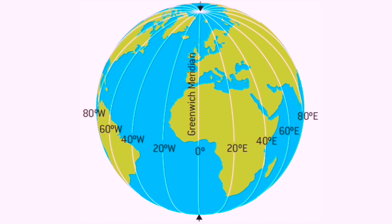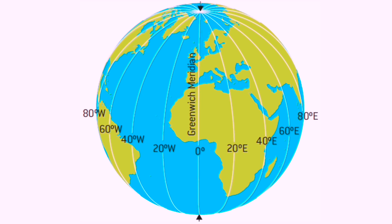We cannot actually see a longitude line on the Earth — they are imaginary. The starting point for longitude is the prime meridian, which is at longitude zero degree, or at Greenwich, London, United Kingdom.